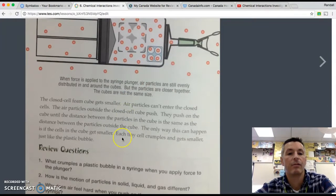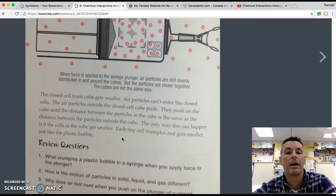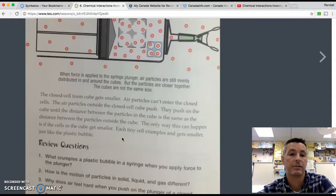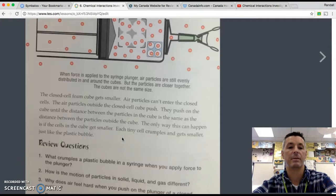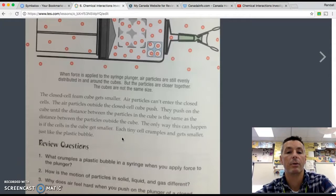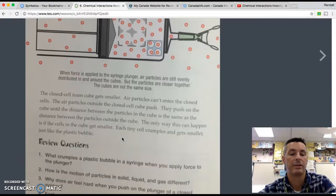The closed cell foam gets smaller as particles, excuse me, air particles can't enter the closed cells. The air particles outside the closed cell cube push. They push on the cube until the distance between the particles in the cube is the same as the distance between the particles outside the cube. The only way this can happen is if the cells in the cube get smaller. Each tiny cell crumples and gets smaller just like the plastic bubble.